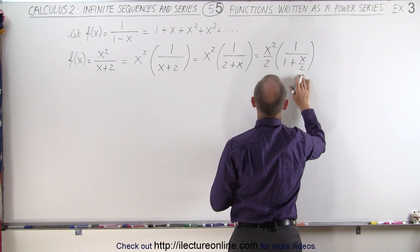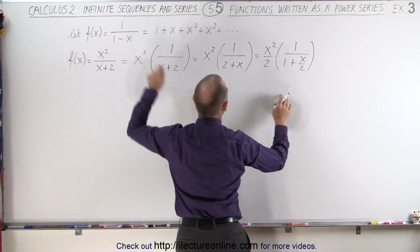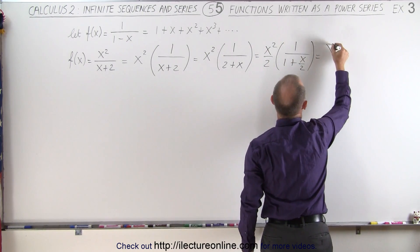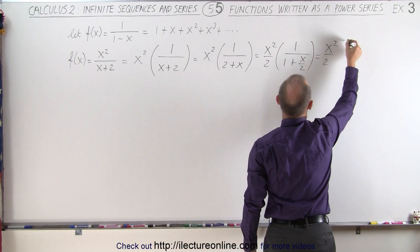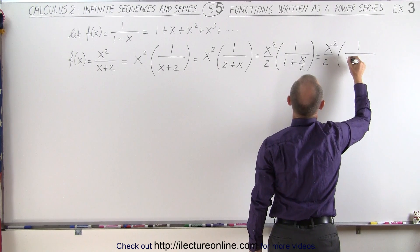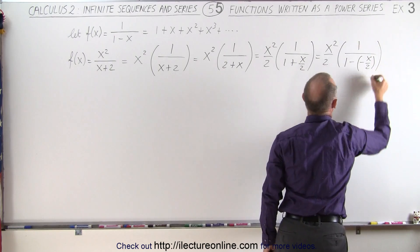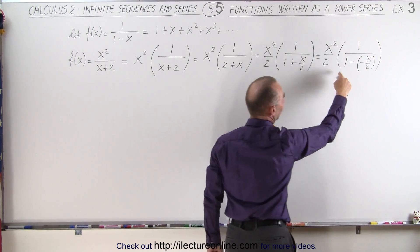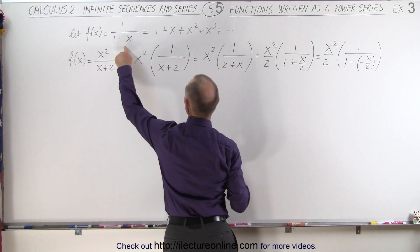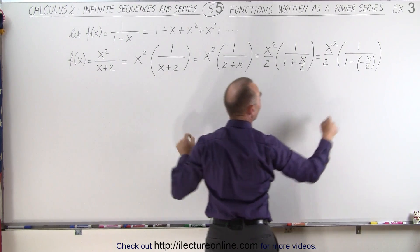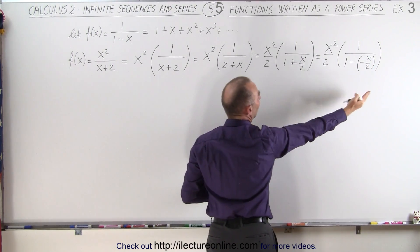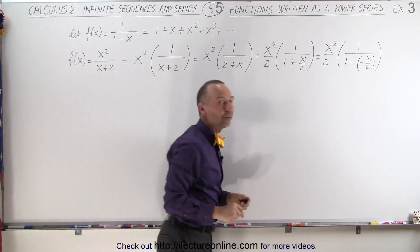And finally we want to make this look like that. So this can be written as x squared over 2 times 1 over 1 minus, and minus x over 2 will do the trick. Now this looks exactly like what we have over here. Instead of an x we have a minus x over 2, and we factored out an x squared divided by 2 to make that happen.